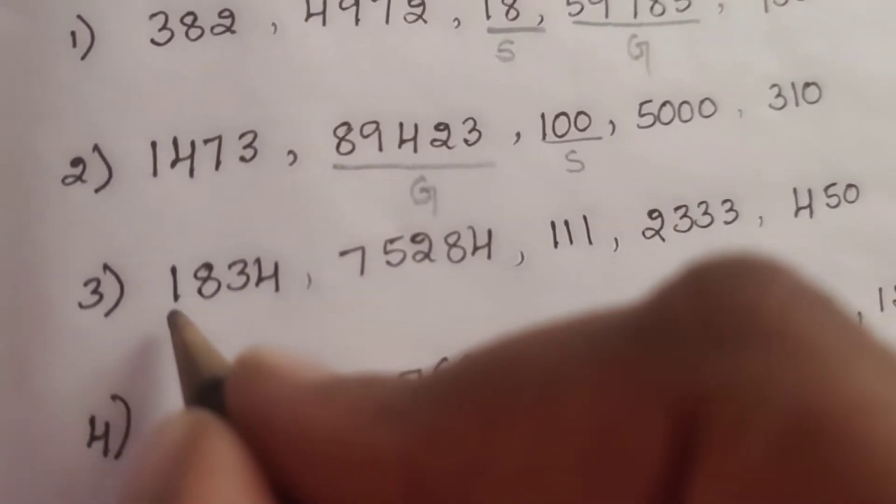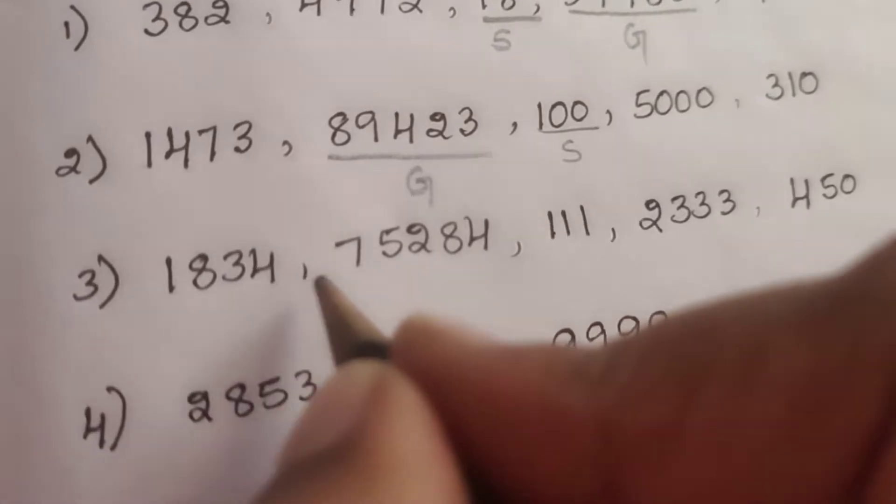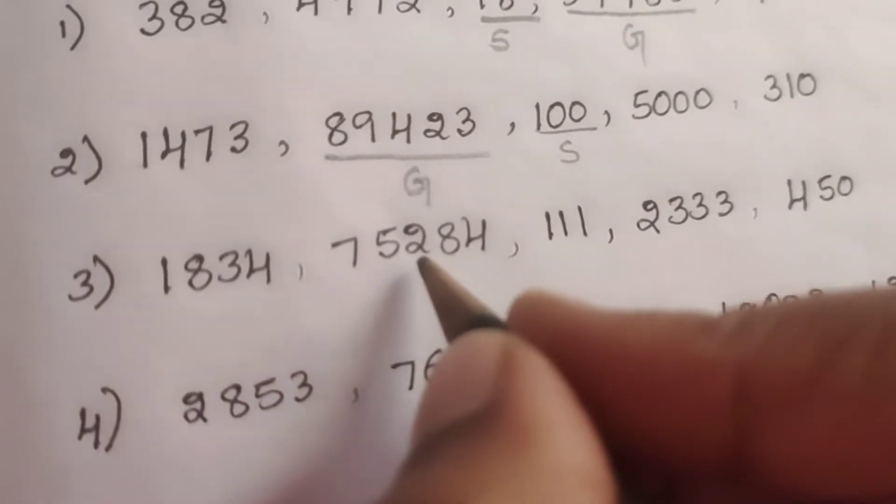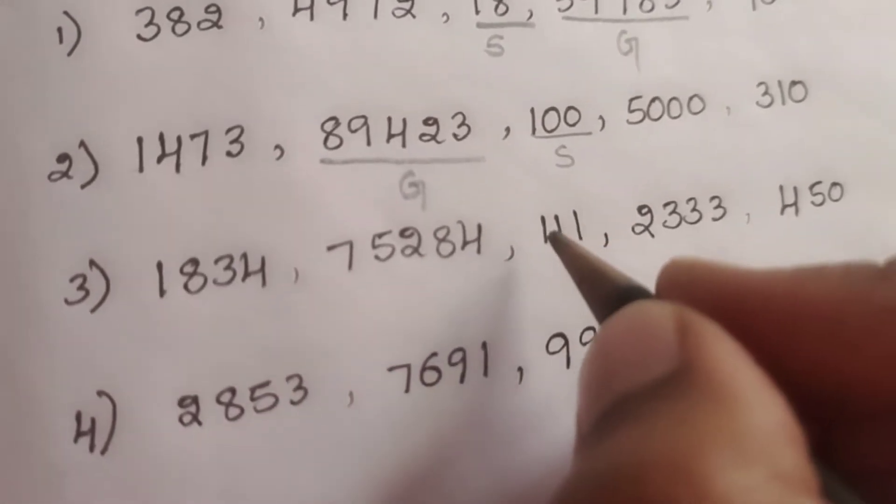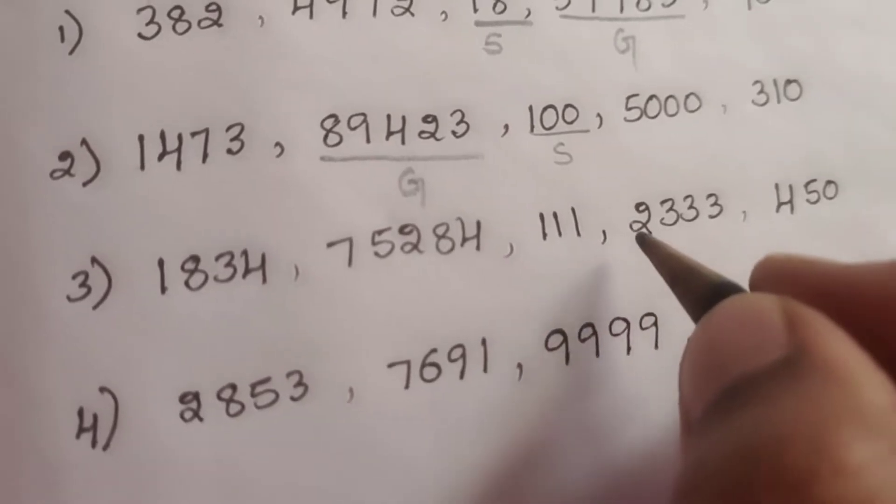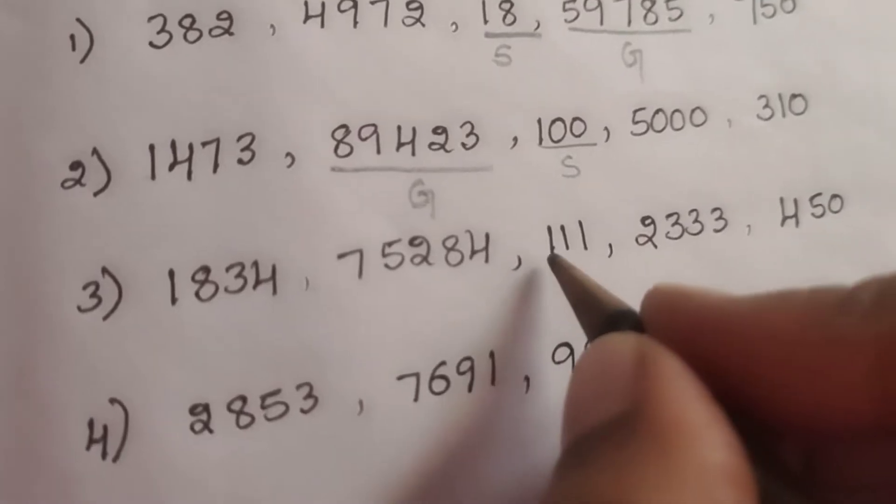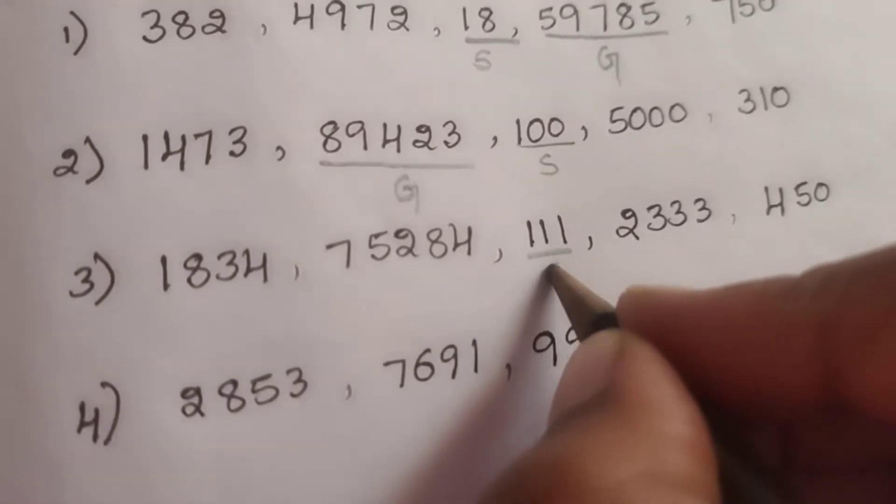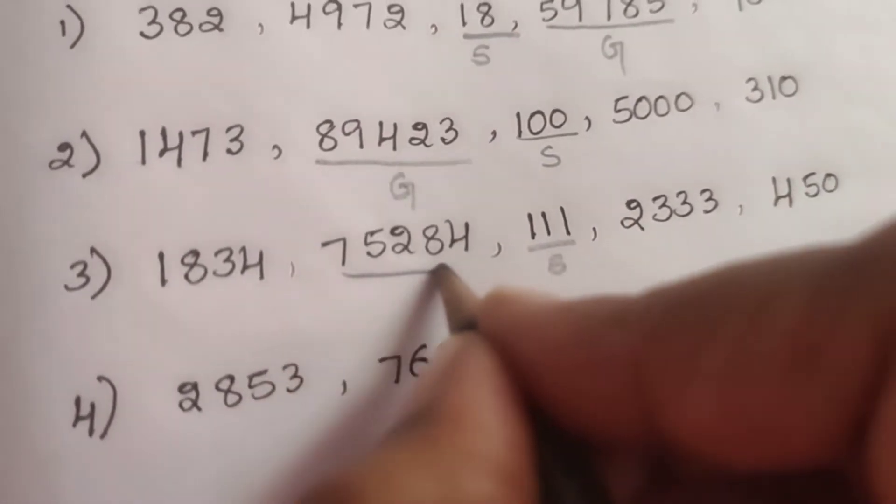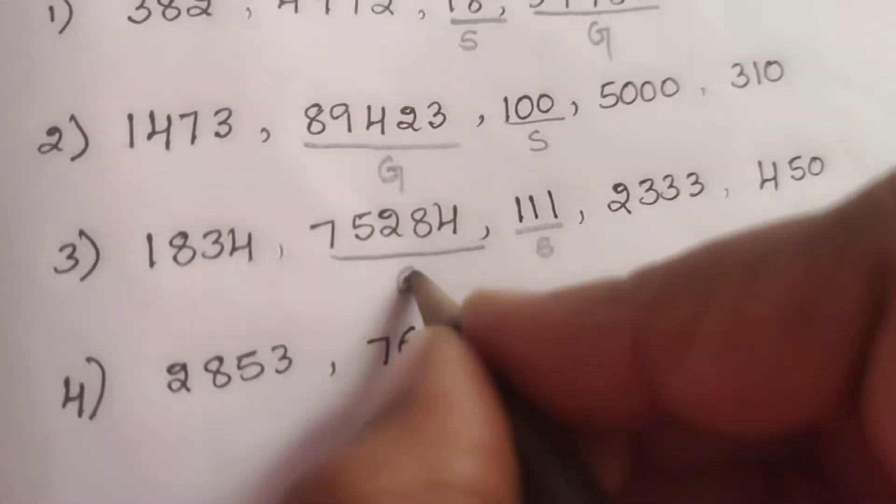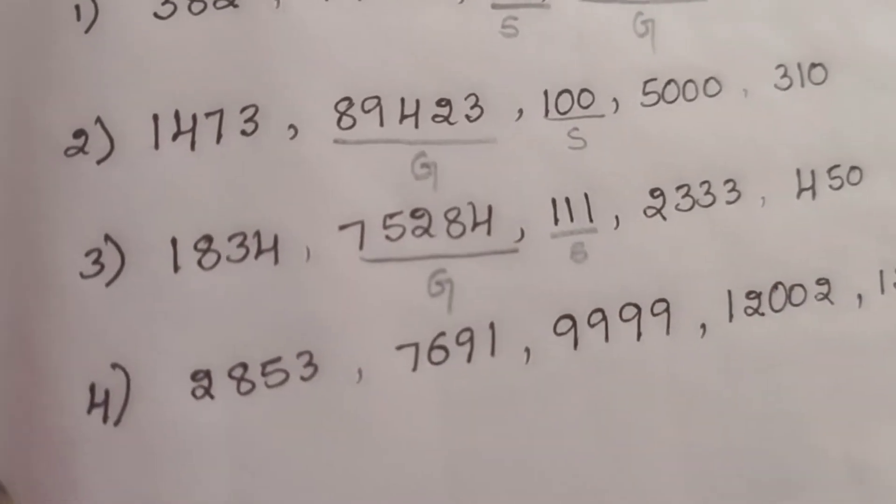Third one: 1834, 75,284, 111, 2333 and 450. Here 111 is the smallest and 75,284 is greatest.